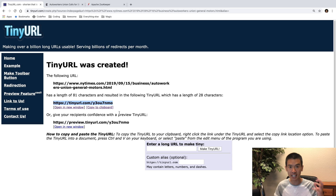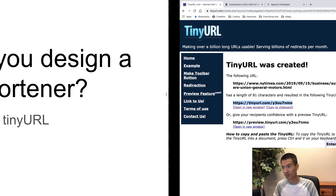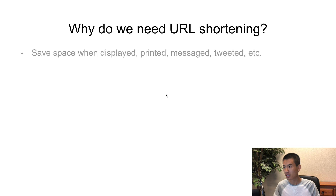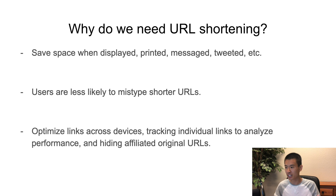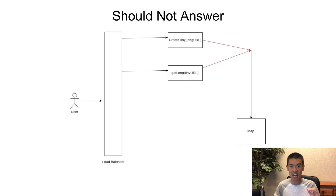So how is this useful? Imagine you're on Twitter — we know Twitter has a character limit for each tweet. With URL shortening we save space when displaying, printing, or tweeting messages. Users are less likely to mistype shorter URLs, and it helps optimize links across devices, track individual links to analyze performance, and hide affiliate original URLs. So businesses would be interested in a URL shortener.